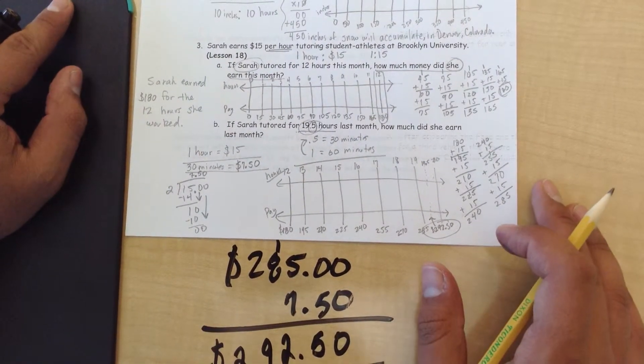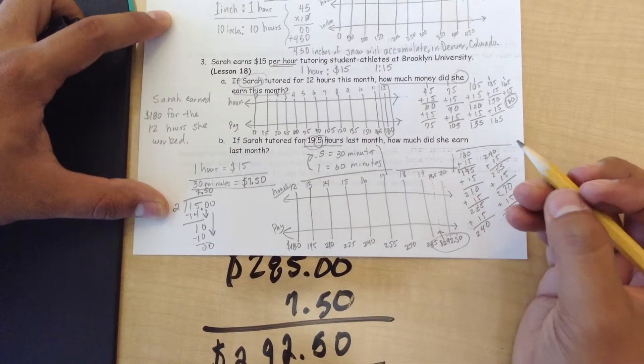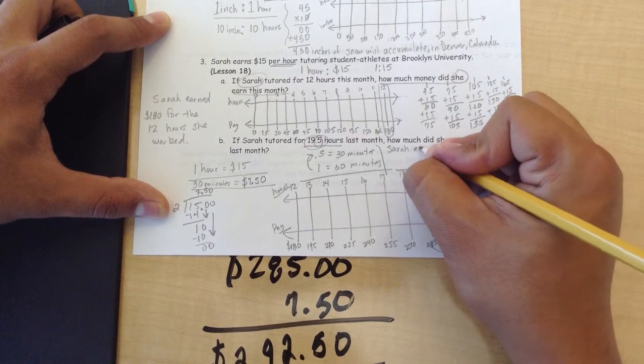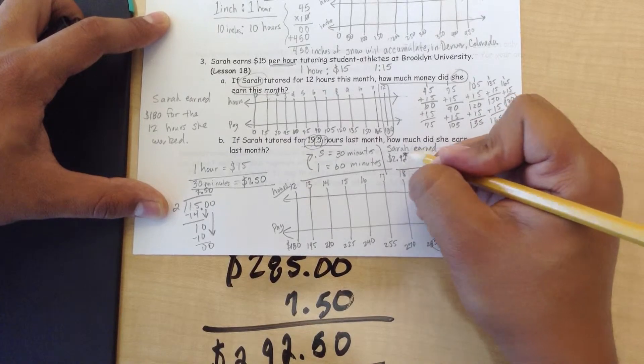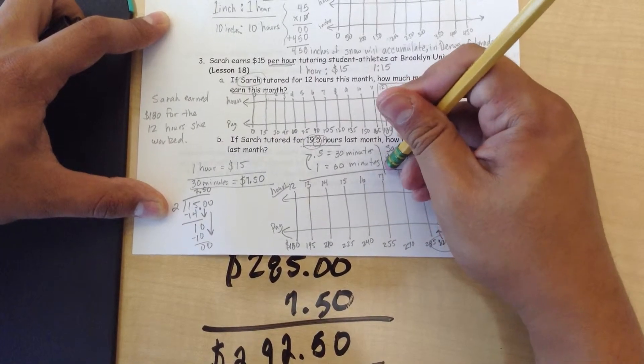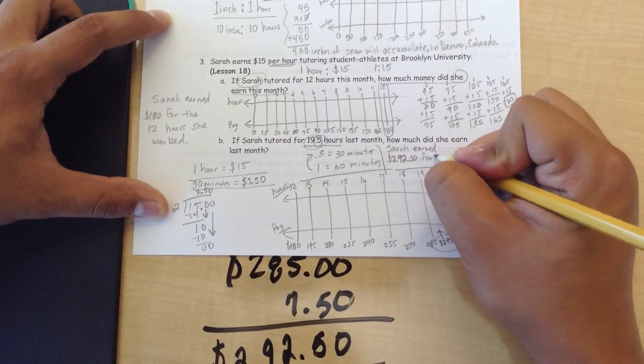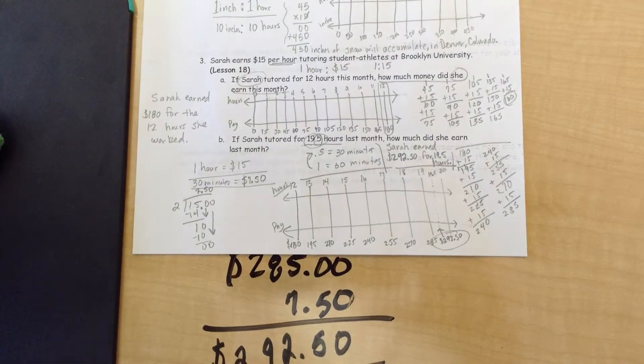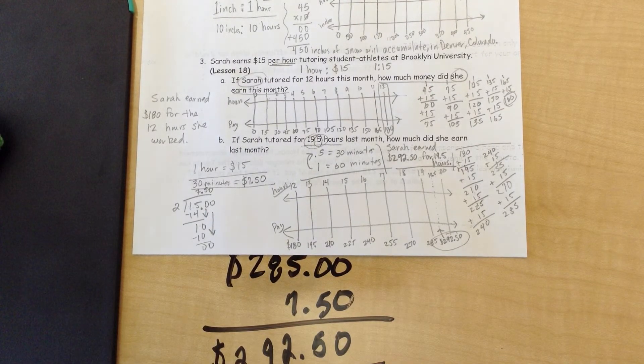And yes, we still have to write a complete sentence. Even though I've taken up a lot of space on here. So let's go ahead and box everything out and use this little area right here. Sarah earned $292 and 50 cents for 19.5 hours. All right. There you go. We solved A and B. And I guess if you ever thought of babysitting, well now you know how much to charge.